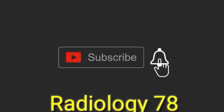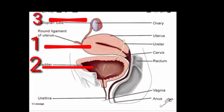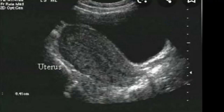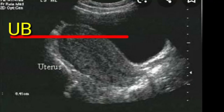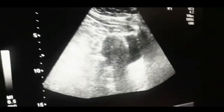Before starting the video, please understand the anatomy of the female genital tract. In the picture, number one shows the uterus, number two shows the bladder, and number three shows the ovaries. This is the basic anatomy of the female genital tract. Today we will talk about ovarian cysts. In the picture you can see the urinary bladder, anteverted uterus with the endometrium, and adnexa.